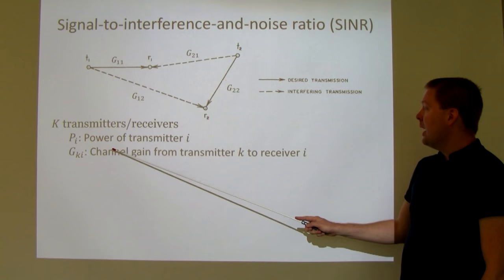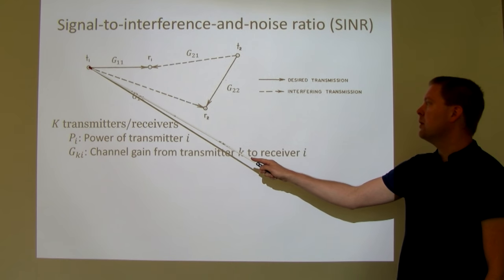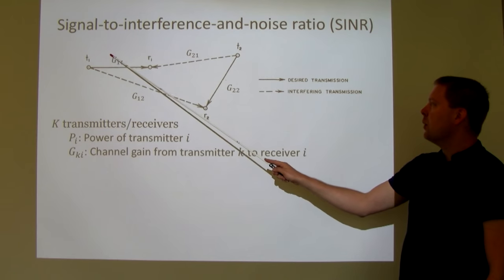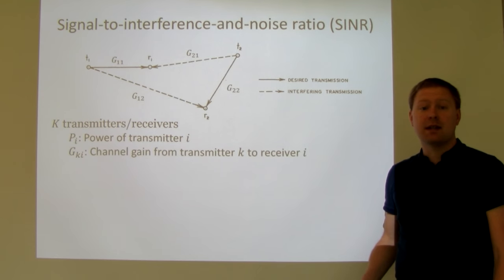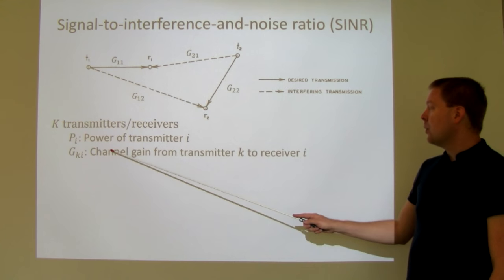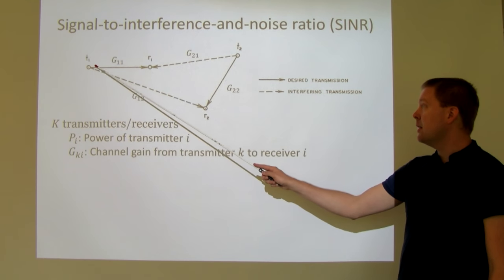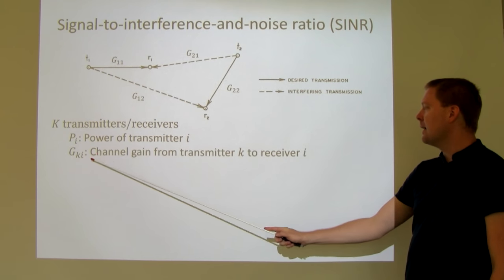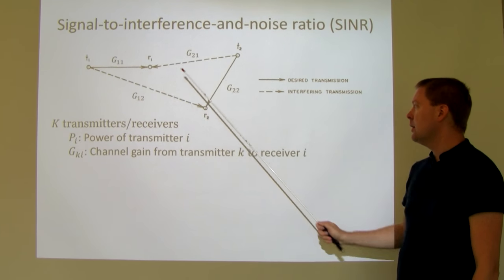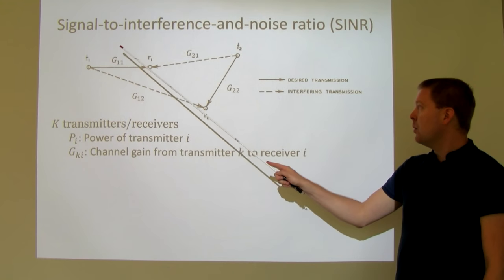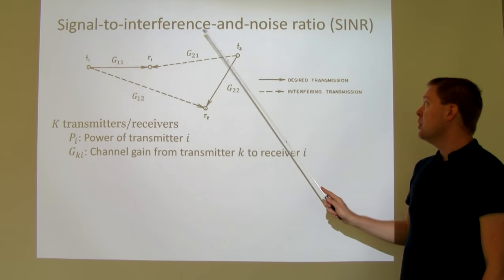The channel describes how much power we lose when the signal radiates and propagates from transmitter to receiver. We call it G11 — in the power domain, how much we are losing, which in a real system can be minus 70 decibels or more. We call this the channel gain, denoted G with subscript KI, where K is the transmitter index and I is the receiver index. For example, G12 means transmitter 1 to receiver 2. All four G parameters describe all channels in a setup with two transmitters and two receivers.